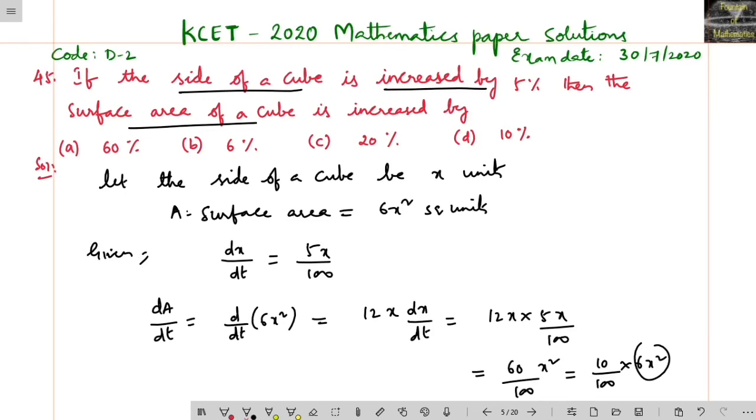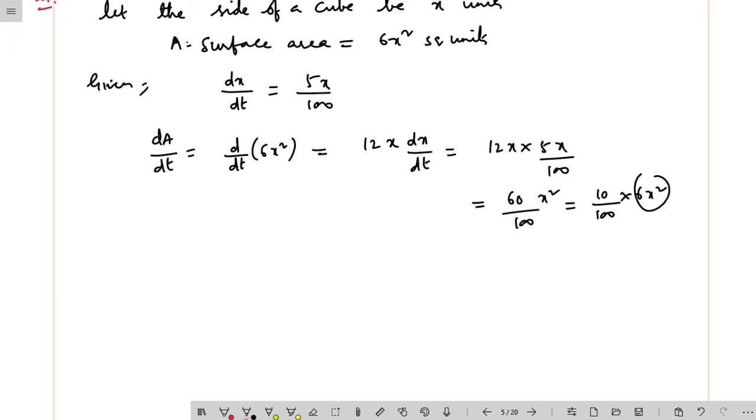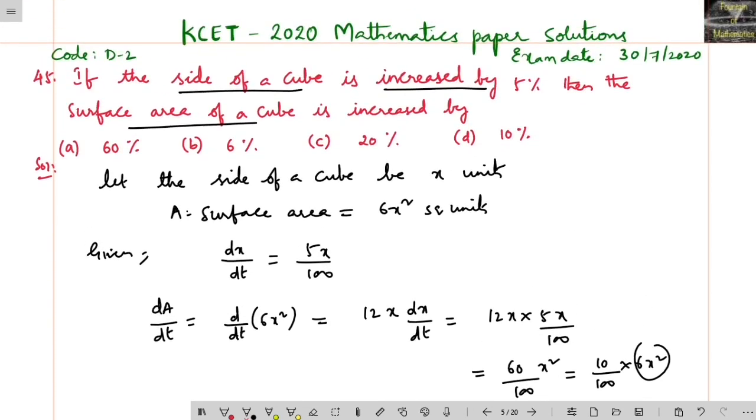So we can say this is 10/100, which is 10% of the surface area. Hence, the surface area is increased by 10%. The answer is option D.